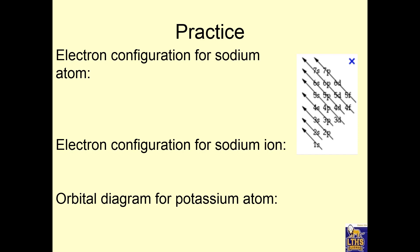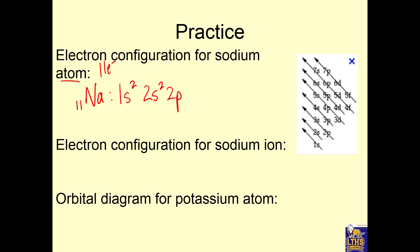Let's do the electron configuration for a sodium atom. Sodium's symbol is Na, and it has 11 protons because its atomic number is 11. If it's an atom, it also has 11 electrons. So I fill the 1s orbital first — you can only put two electrons there. Then 2s fills up with two electrons. Then the 2p orbital has three orbitals, so you can put in six electrons. That takes care of 10 electrons. Sodium's 11th electron goes into the 3s orbital. Adding up: 2+2+6+1 = 11 electrons for sodium.